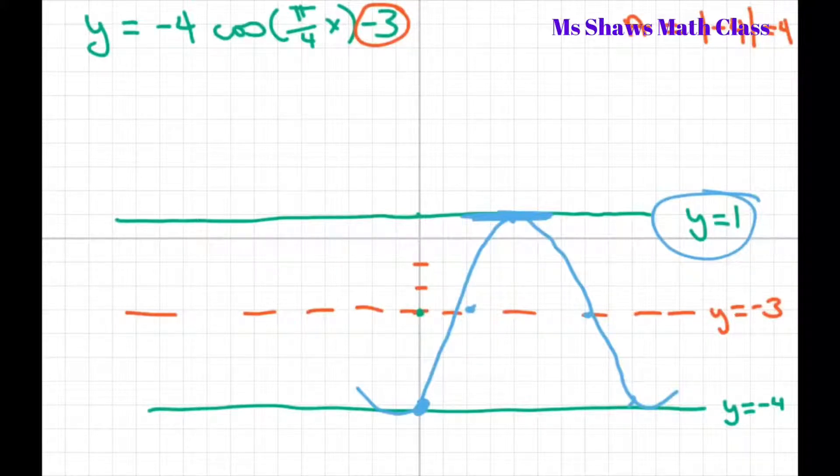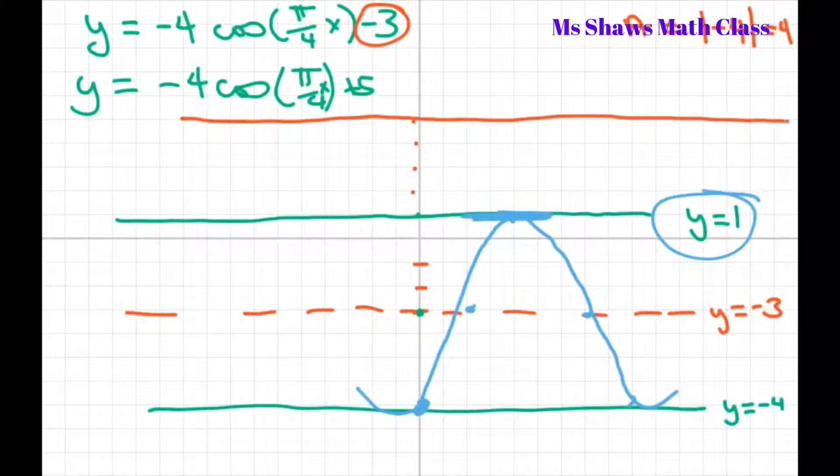Let's look at the other one that we had. We had y equals negative 4 cosine of π over 4 x plus 5. In that case, we're starting at 5 as our new center line. And we're going down 4, which would be at y equals negative 1. And then we go up 5, which would be y equals 9.